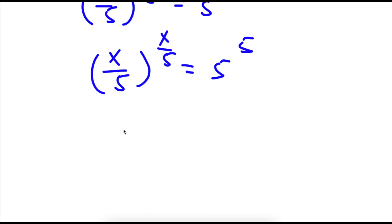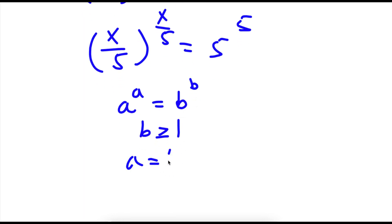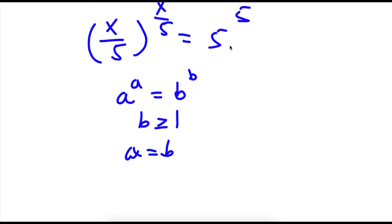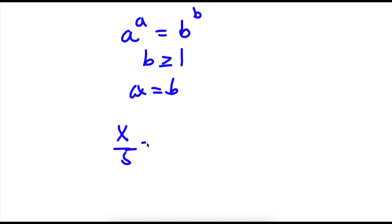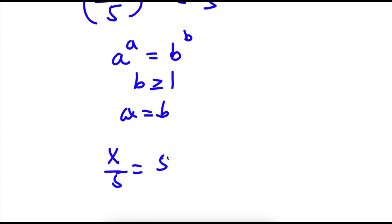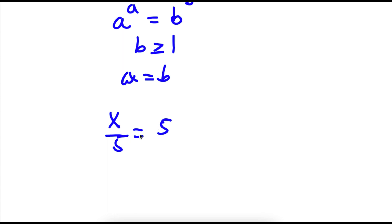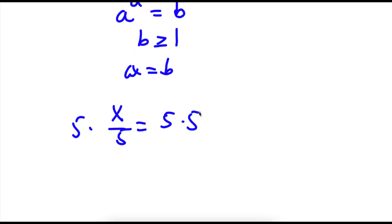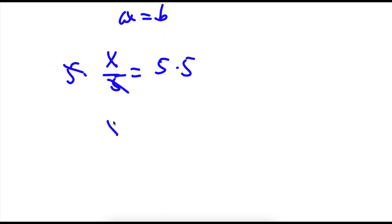Now if I have something in the form a to the power of a equals b to the power of b, and b is greater than or equal to 1, then a equals b. In this case b equals 5, which is greater than or equal to 1, meaning x over 5 is equal to 5. Multiplying both sides by 5, I get x is equal to 5 times 5, which is 25.